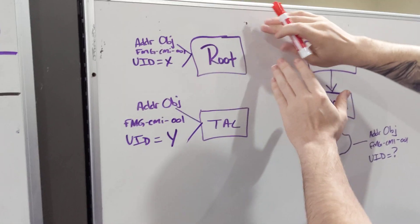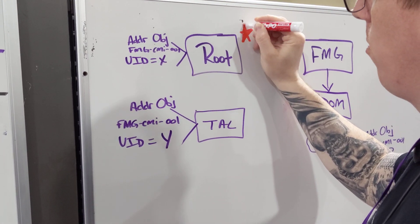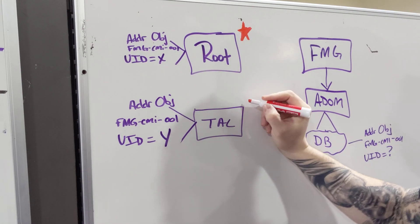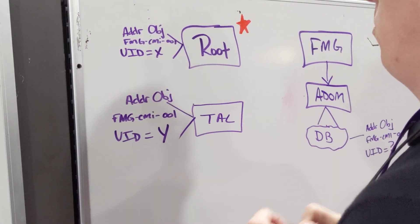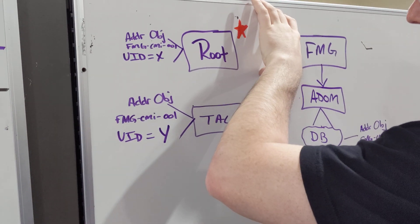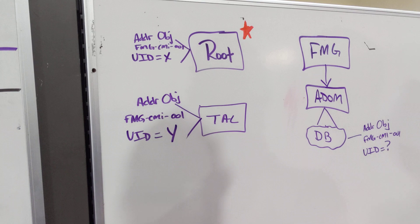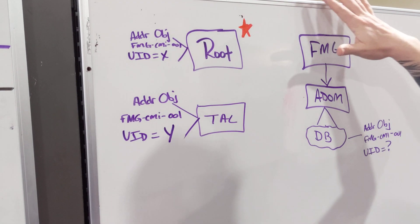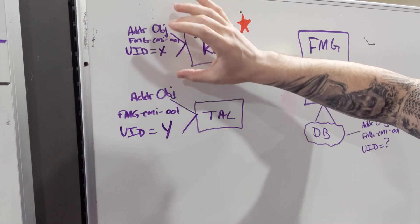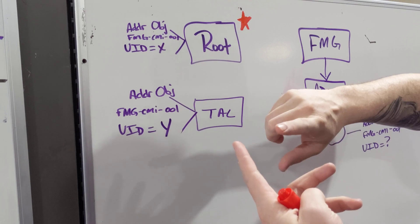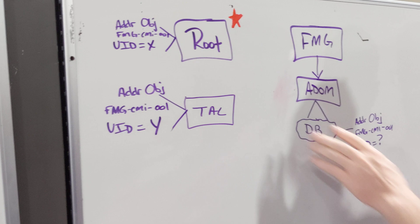Root is going to be our primary authoritative source for information. All of the branch firewalls have been added as secondary. When you go into the firewall and create an address object, there is a data field on that address object called a unique identifier. This applies to all objects in the firewall — certificates, services, whatever else you create — there's a unique identifier.